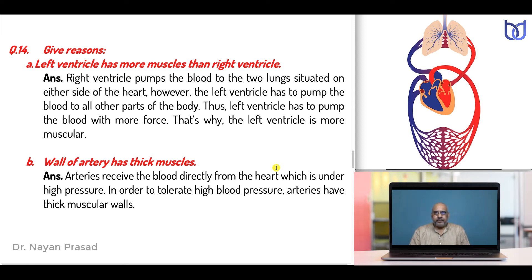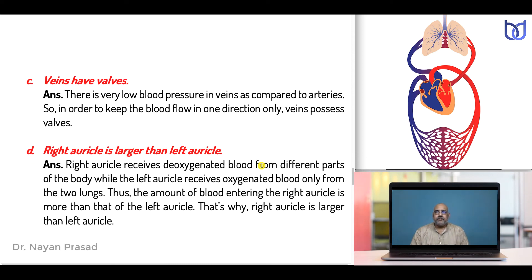Why does the wall of an artery have thick muscles? Arteries receive blood directly from the heart, which is under high pressure. In order to tolerate this high blood pressure, arteries have thick muscular walls. Why do veins have valves? There is very low blood pressure in veins compared to arteries, so in order to keep blood flowing in one direction only, veins possess valves.